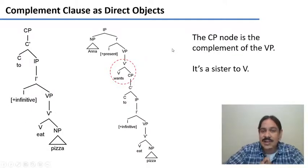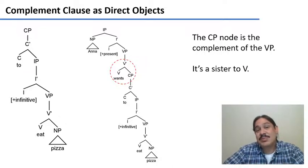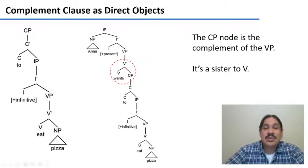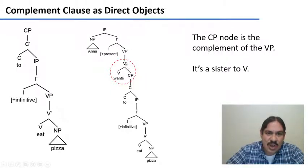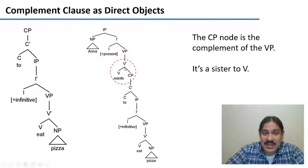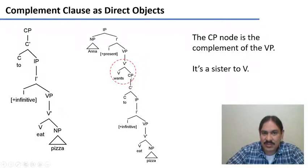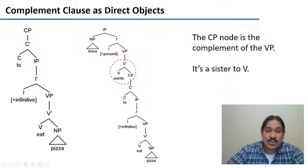Where are we going to put this phrase? In the same position where we would put a direct object. We're going to have it as a sister of V — as a daughter of the V-bar where complements go. So this final V-bar projects the verb head once and the direct object, the complement — a complement phrase. This phrase is 'to' infinitive 'eat pizza,' as in 'Anna wants to eat pizza.'